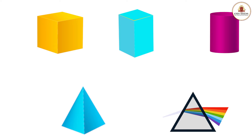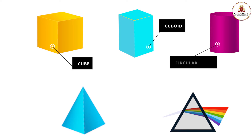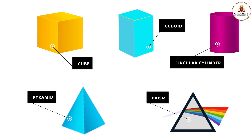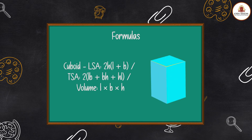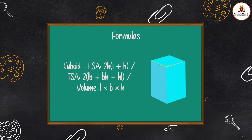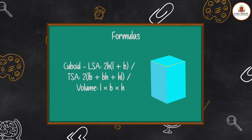Surface Areas and Volumes: The surface area and volumes of 3D objects are the simplest of all. LSA stands for Lateral Surface Area — you don't count the top and bottom, just the lateral part. When TSA (Total Surface Area) is mentioned, you consider the entire 3D object. The dimensions are always given; you just need to remember the right formula for the right shape.